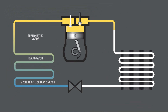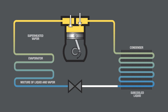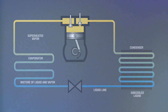As refrigerant enters the system's condenser, it's in a vapor state. As heat is removed from the vapor, it will turn to liquid at its saturation condensing temperature. After the vapor has turned to liquid, any temperature of the liquid below this saturation condensing temperature is called subcooling.